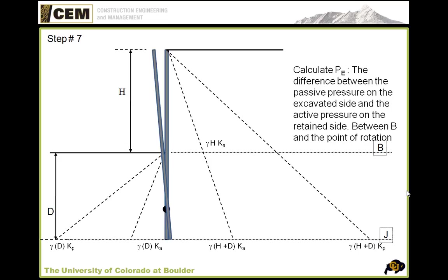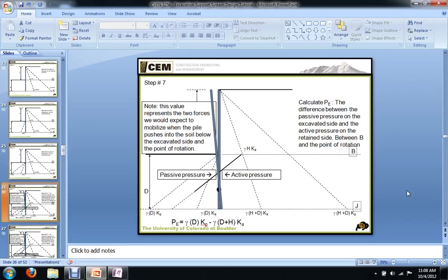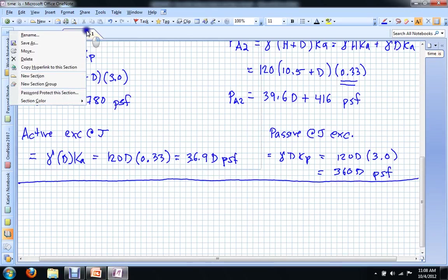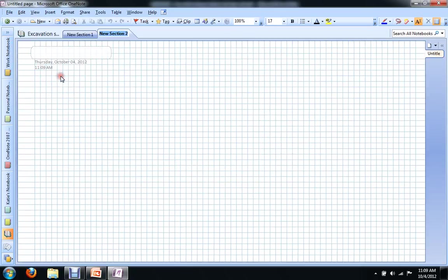So our next step in our analysis is to compute what we're going to call P sub E. That's the difference between the passive pressure on the excavated side and the active pressure on the retained side between plane B and the point of rotation. Let me draw that out for you here because I think it can be a little bit complicated.